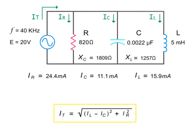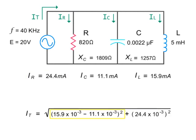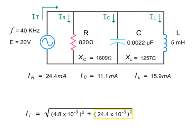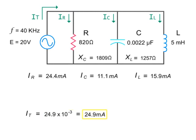To calculate the total current through a parallel circuit, take the square root of the current through the inductor minus the current through the capacitor, squared, plus the current through the resistor, squared. Thus, taking the square root of 15.9 milliamps minus 11.1 milliamps, squared, plus 24.4 milliamps squared, gives a total current of 24.9 milliamps.